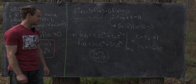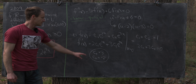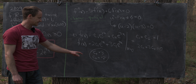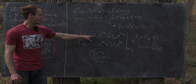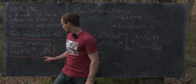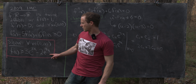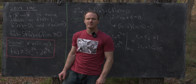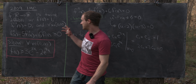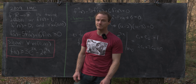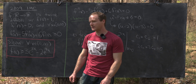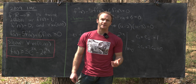Plugging c₁ = 3 and c₂ = −2 into the general solution gives exactly the lower bound 3e^{2x} − 2e^{3x}. So this warm-up didn't solve the problem, but it gave us motivation for where that function comes from.